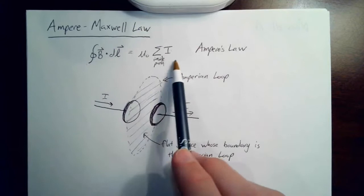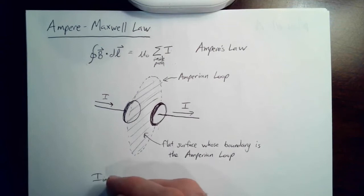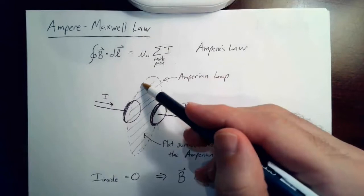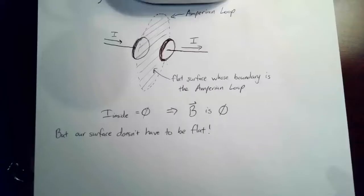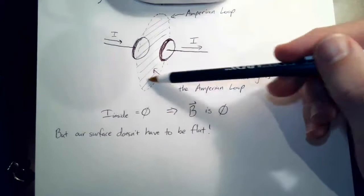So now how much current pierces this surface? Since there's no current between the plates, the answer is zero — I_inside equals zero — and therefore we can conclude that B is zero, at least along this dashed line.